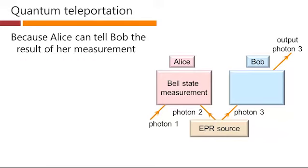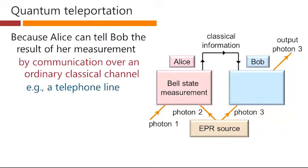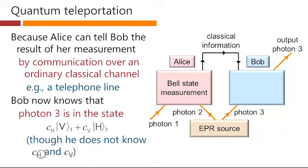Because Alice can tell Bob the result of her measurement by communication over an ordinary classical channel, for example a telephone line, Bob now knows that photon 3 is in this state, though he doesn't know what these coefficients are. He knows that whatever those coefficients were of the input photon, this photon 3 is in this state, because the system has been collapsed into that state.